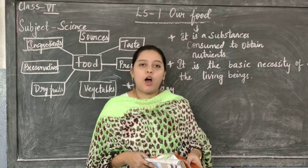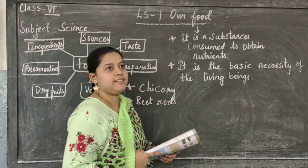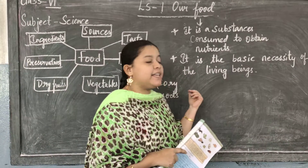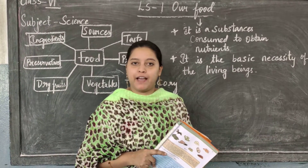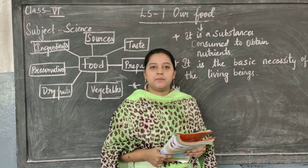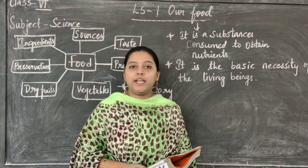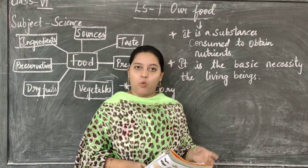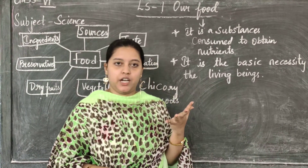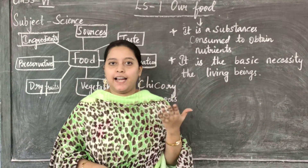Chicory is highly cultivated for its high fiber content. Chicory is a source of inulin, which is a type of soluble fiber. Inulin helps you with digestion, and it is also present in onions and garlic.